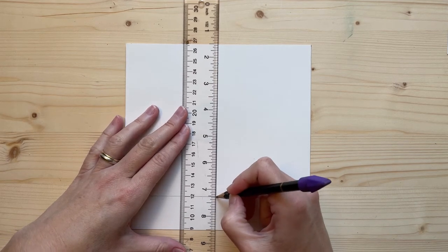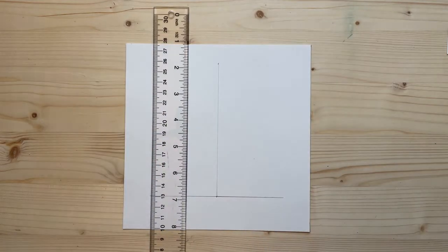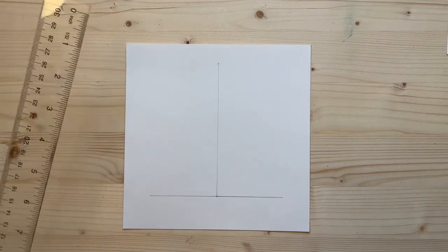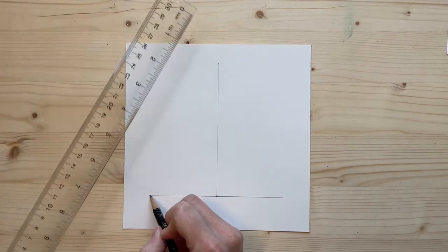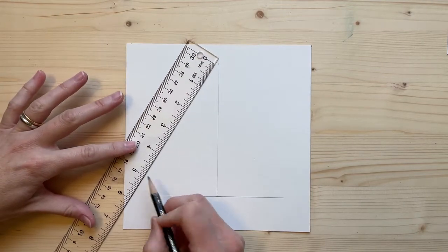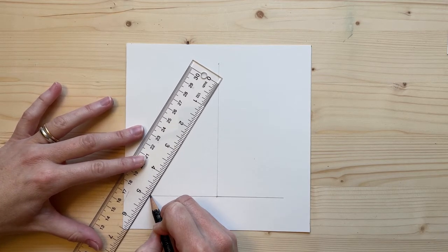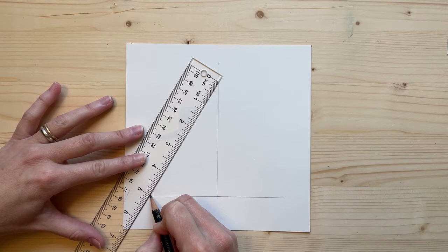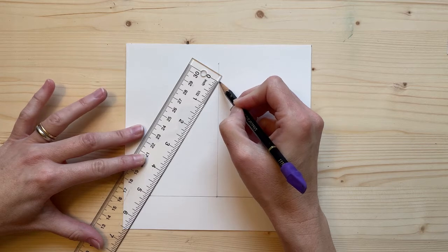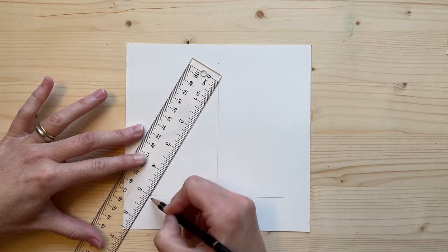Now I'm going to draw from this point. I'll put my ruler with the five inches on that point and bring my ruler to where the zero touches the line up here that I drew in the center. Now I have a five-inch line—one five-inch side.